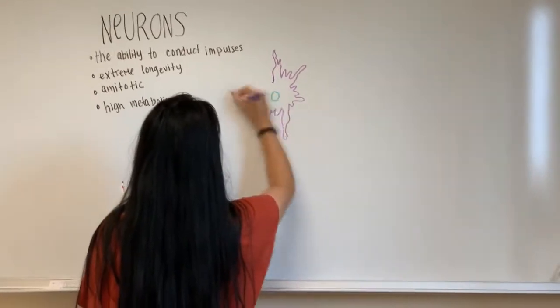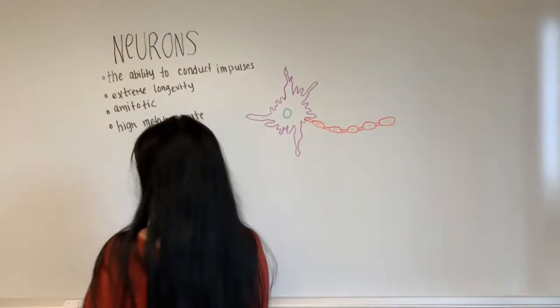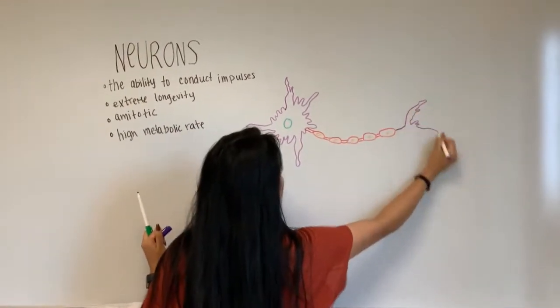The neuron consists of the dendrite, the nucleus, cell body, node of Ranvier, Schwann cell, myelin sheath, axon, and axon terminal.